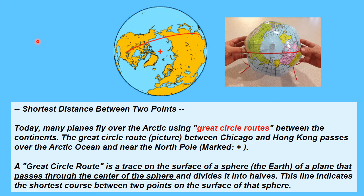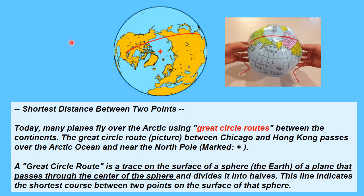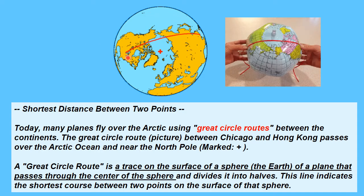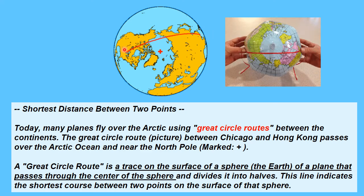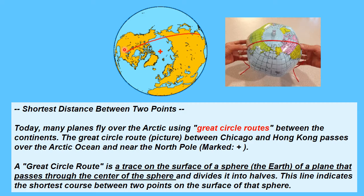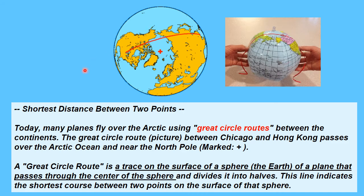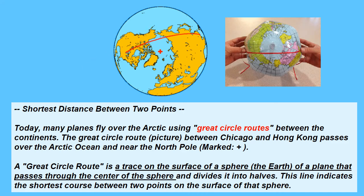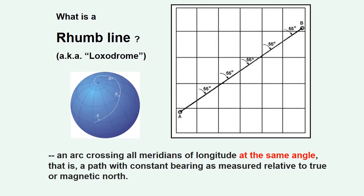For example, flying from Chicago to Hong Kong, you wouldn't take a big dog-leg out through the Pacific Ocean — the shortest way is to fly over the Arctic. It depends on whose territory you're flying over, but airline pilots try to approximate a great circle route. A rhumb line — sometimes called a loxodrome — is a line of constant compass bearing. If you start at origin A on a bearing of 55 degrees and end up at B, that route will cross all meridians at the same angle.